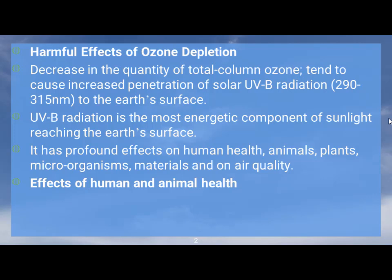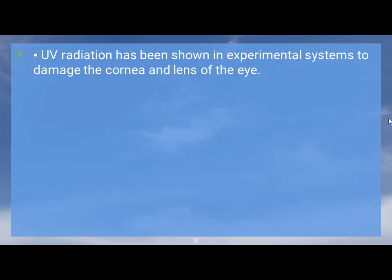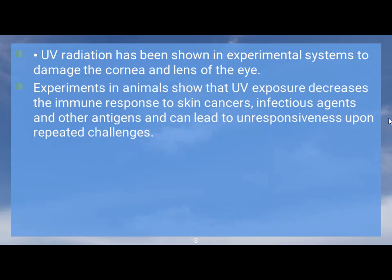Regarding effects on human and animal health, potential risks include an increase in the incidence of and morbidity from eye diseases, skin cancer, and infectious diseases. UV radiation has been shown in experimental systems to damage the cornea and lens of the eye. Experiments in animals show that UV exposure decreases the immune response to skin cancers, infectious agents, and other antigens.